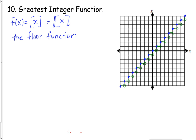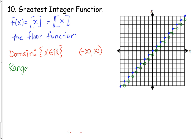The domain of this function — what x is allowed to equal — is all real numbers, since I can take the greatest integer of any number. In set notation, x is an element of the real numbers. In interval notation, the domain is from negative infinity to infinity with parentheses. The range is the possible y-values. Looking up and down, I notice gaps — these steps are not connected vertically. The output is always an integer, never a fraction or decimal, only a whole number with a plus or minus.